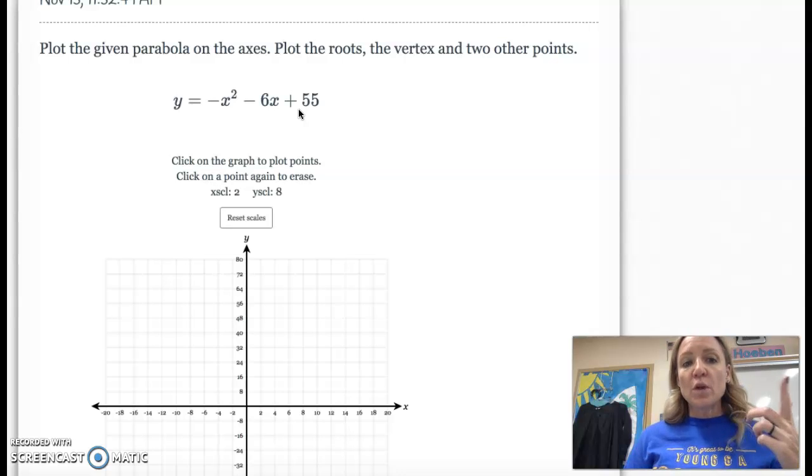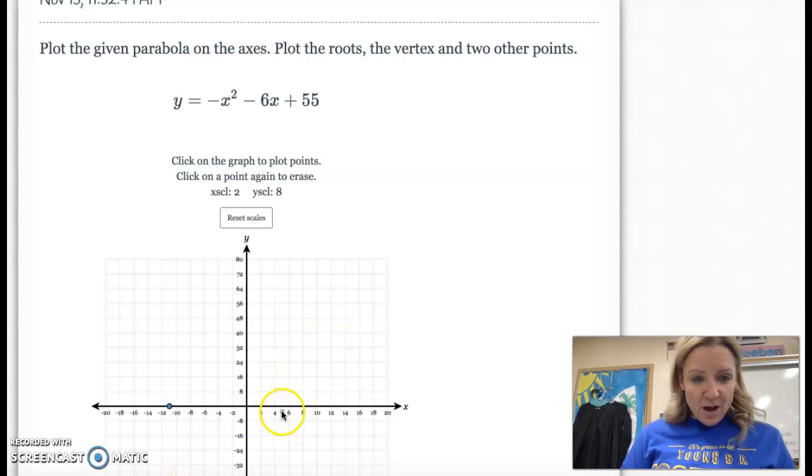So when you go to graph those two points on the x-axis, you should have the opposite of each of those. So you should have one at negative 11. And so if your scale is only at one, your x-axis is only going to go to negative 10. So I changed the scale to two. That means negative 11 is halfway between negative 10 and negative 12. And then positive five is halfway between the four and the six. So I've got my two roots plotted.